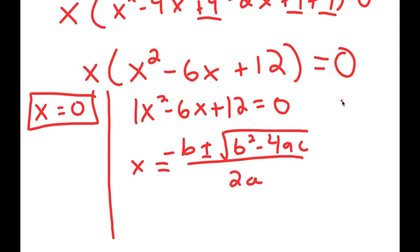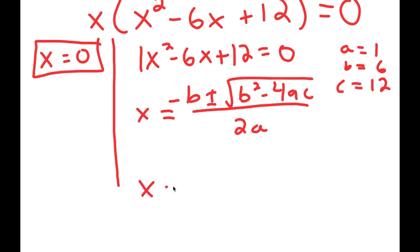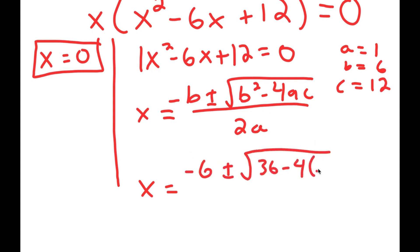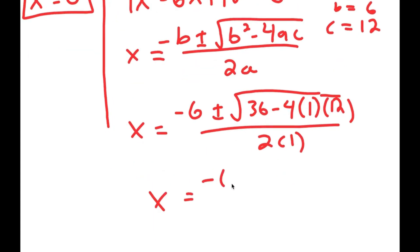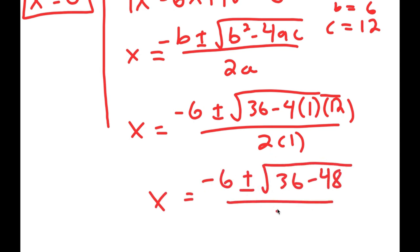So in this case, a is 1, b is 6, and c is 12. Plugging these into the quadratic formula, I get negative 6 plus or minus the square root of b squared — so 6 squared, which is 36 — minus 4 times a, which is 1, times c, which is 12, all over 2a, so 2 times 1. This is equal to negative 6 plus or minus the square root of 36 minus 48 over 2.